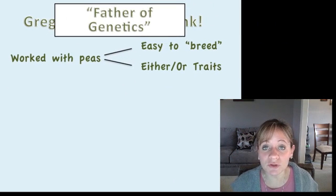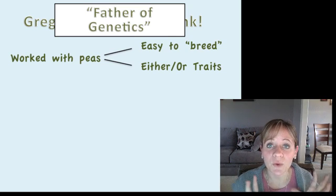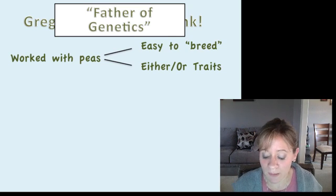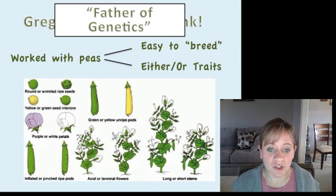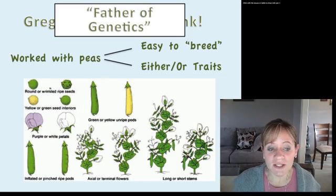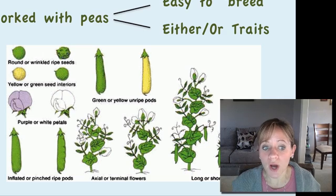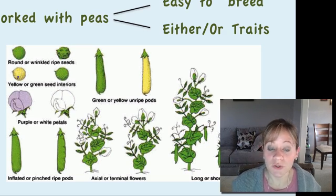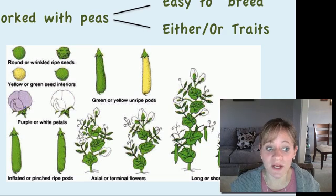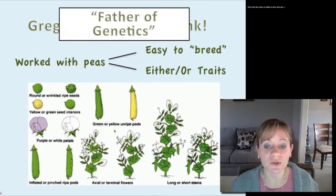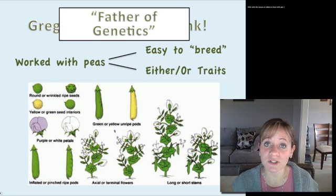The second reason was that peas had several traits — at least seven — that were either-or traits. When you look at the seeds they're either round or wrinkled and shriveled, either yellow or green. When peas grow they turn into flowers, and the flowers are either purple or white. All of these traits are either-or, with no in-between. These are very discrete characteristics that Mendel was able to very easily follow through several generations.